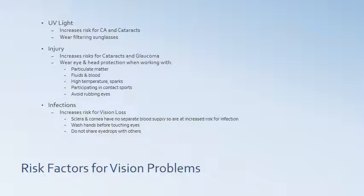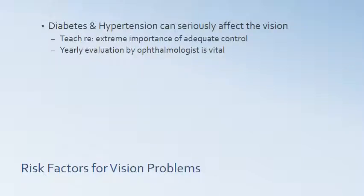Infections are another risk factor and will increase the risk for vision loss. The sclera and cornea have no separate blood supply, so they are at increased risk for infection. It's very important to wash hands before touching eyes and to teach patients not to share eye drops with others — it's better to get your own normal saline than to share someone else's. Medical problems such as diabetes and hypertension can seriously affect vision, and adequate control of each disease is vital. A yearly evaluation by an ophthalmologist is vital to eye health.